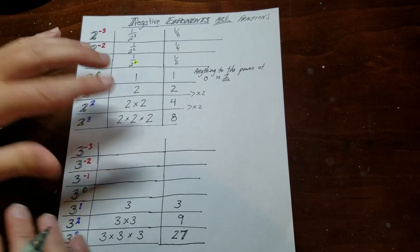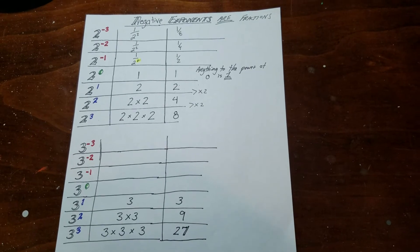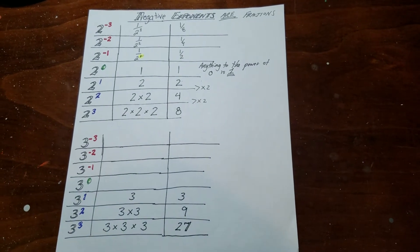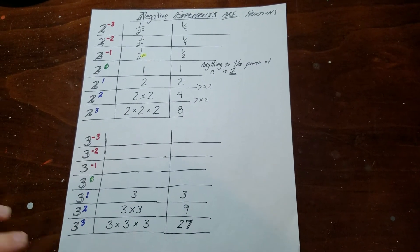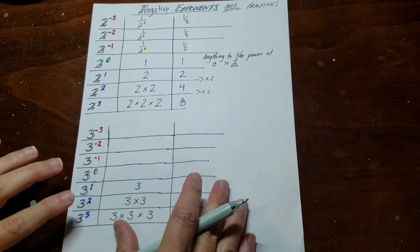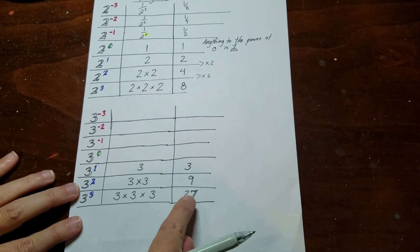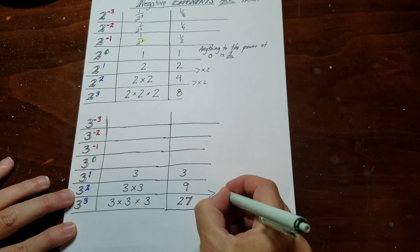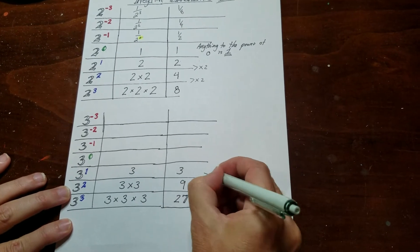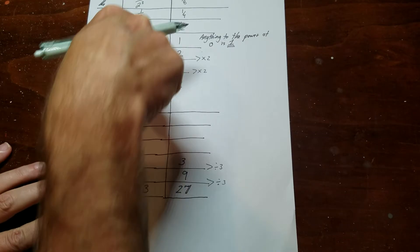So sometimes when I do this, kids will question it. They'll say, well, maybe that's how it works for 2. What if we try it with 3 or 4 or 5 or like another number? And so I'm going to use 3 just because it's a small number. So if we look, 27 divided by 3 is 9. So if we divide that by 3, just like here, every time we go this way, like down the table,